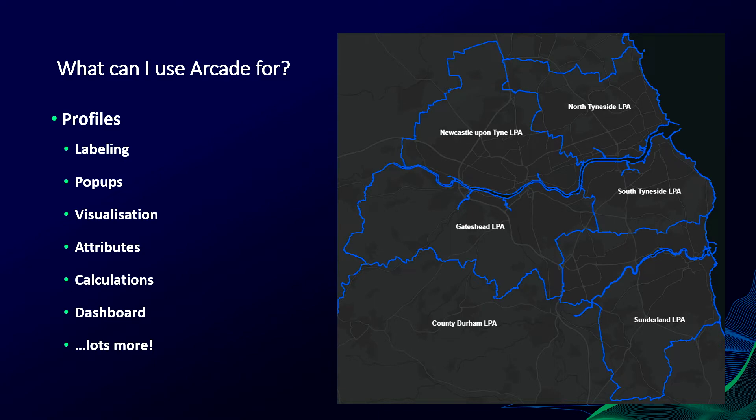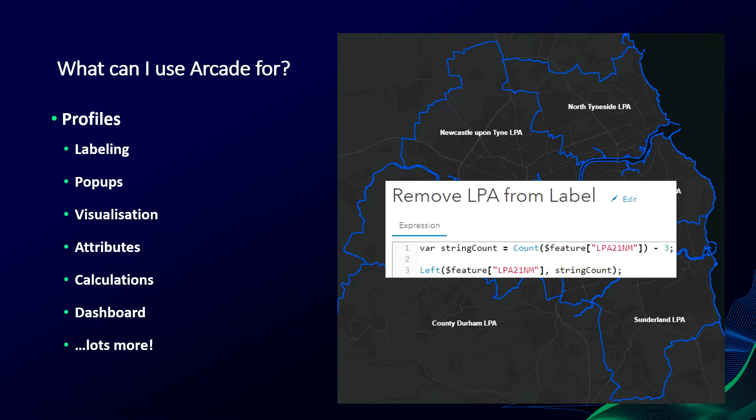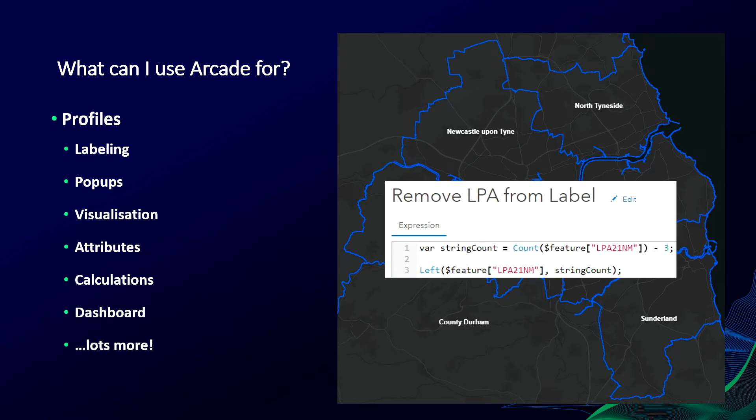What can I use Arcade for? Arcade has something called profiles, and a profile is the context in which an Arcade expression is used. This is a sample of 19-plus profiles that are available. Some of them are self-explanatory, like labeling — this is the context in which you can use Arcade to label your data. For example, I have some local authority boundaries where I'm using a field for labeling. You can see at the end it's included the string LPA. I can use the function Left to strip this string off so we're left with just the name of that local authority. That Left function might feel familiar — it could be that you used it in Excel, and they work in the exact same way. That familiarity between Excel and Arcade is actually how I built up my confidence and skill in using the language. For other profiles, the help documentation is really clear to understand where and what they can be used for.